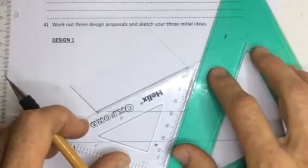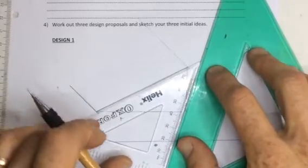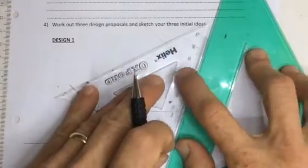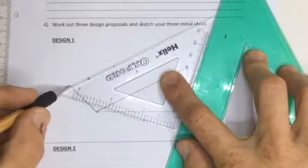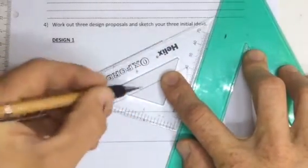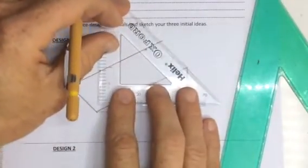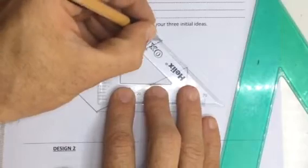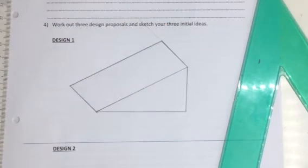Place a ruler along the edge of it, slide it until it reaches that corner, draw a line which is now parallel to that line, and join it in. And there we go. We've got a three-dimensional wedge.